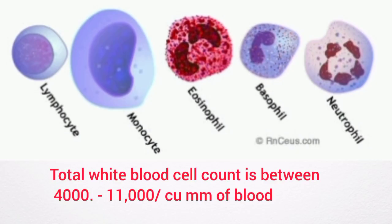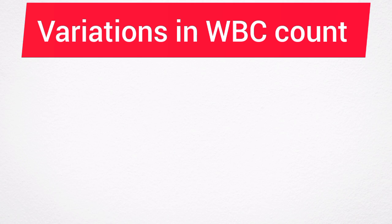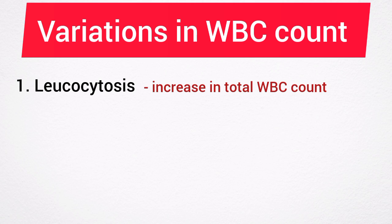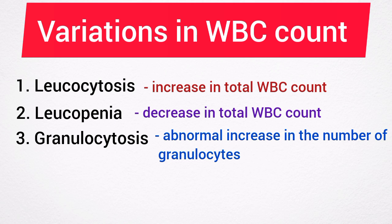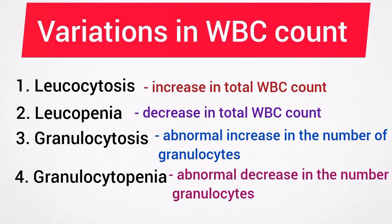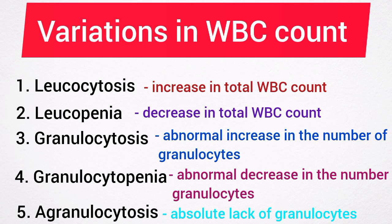The total white blood cell count is between 4,000 to 11,000 per cubic millimeter of blood. Variations in white blood cell count include: leukocytosis, which is the increase in total white blood cell count occurring in both physiological and pathological conditions; leukopenia, which is the decrease in total white blood cell count; granulocytosis, which is the abnormal increase in the number of granulocytes; granulocytopenia, the abnormal reduction in granulocytes; and agranulocytosis, an acute pathological condition characterized by an absolute lack of granulocytes.